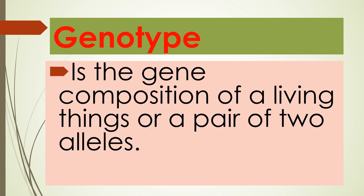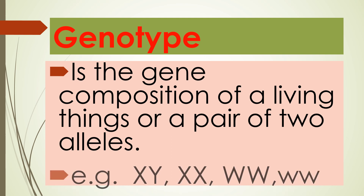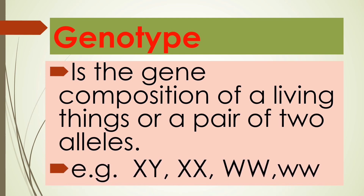Genotype is the gene composition of a living thing, or a pair of two alleles. Examples: X, Y; X, X; W, W (both capital letters); and w, w (both lowercase letters).